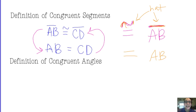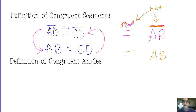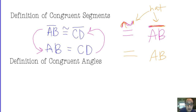The next definition we learn about is the definition of congruent angles. It's pretty similar to the definition of congruent segments, where we're switching between things being congruent versus them being equal.